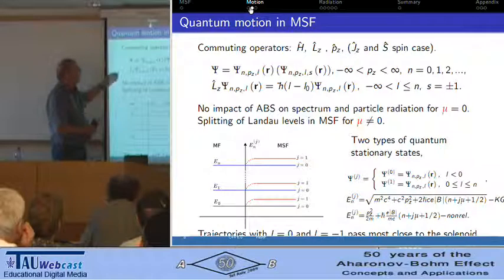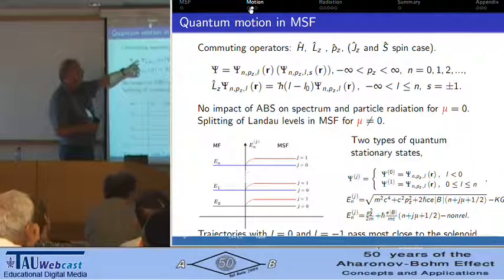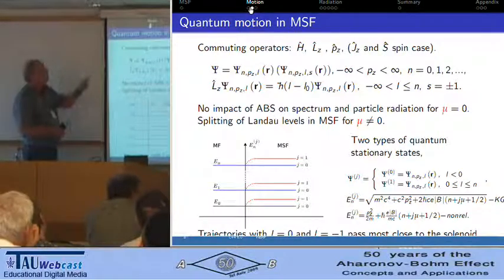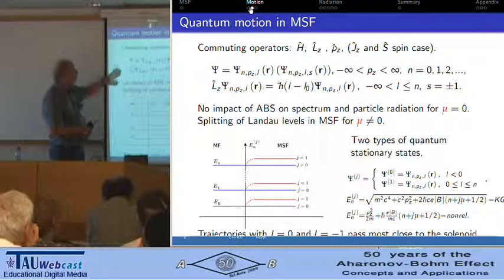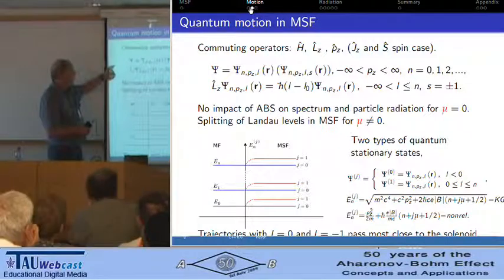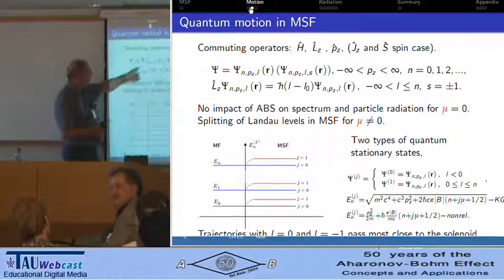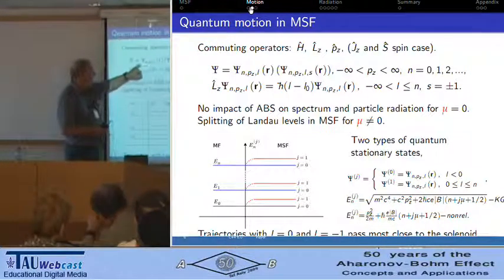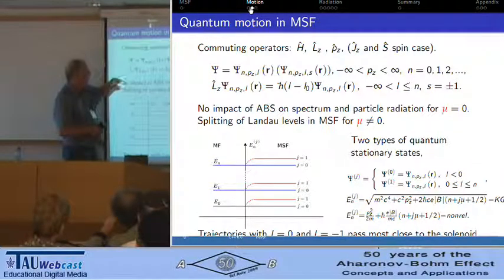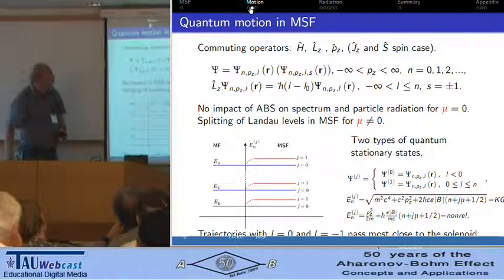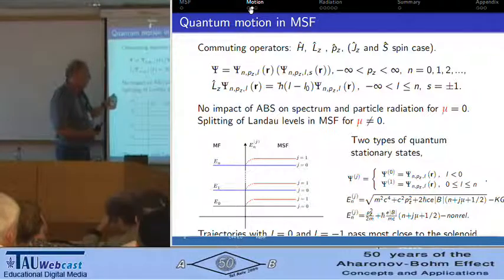Speaking about the quantum problem, we have here commuting operators: the Hamiltonian, the angular momentum and its projection, and the momentum along the axis. In the spinning case — the Dirac equation case — we also have spin operators. The explicit form of the wave function is difficult to discuss here, but we have quantum numbers M, Pz, L, and l. These mark energy levels: Pz is momentum along the axis, and L is the angular momentum. If we select L in this way, there is a complete correspondence between quantum states and the classical picture shown before.